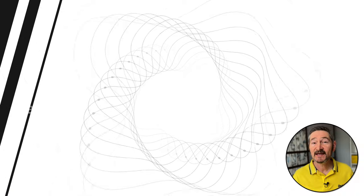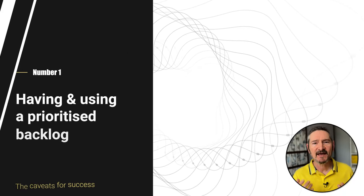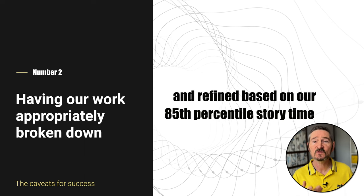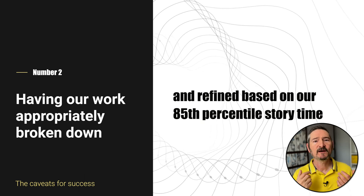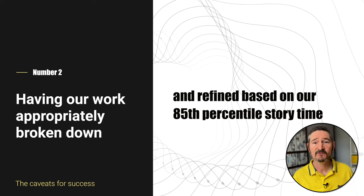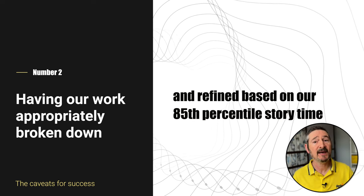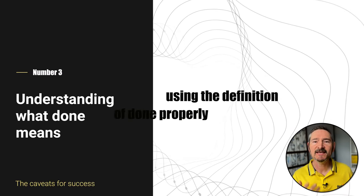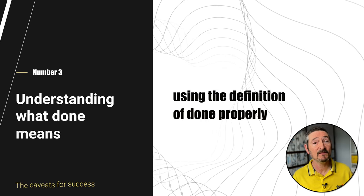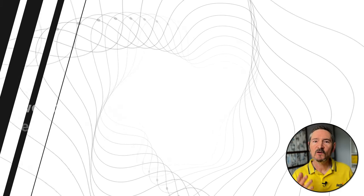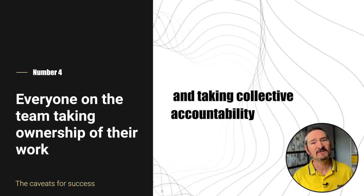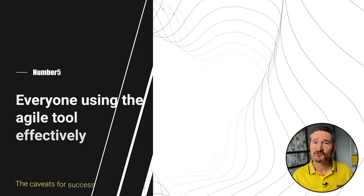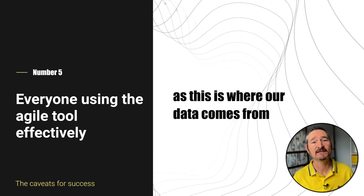The caveats: having and using a prioritised backlog; having your work appropriately broken down and refined based on your 85th percentile story cycle time — so if that number is 8 days, we know that 8 days is the largest story we can take; understanding what done means, so using a definition of done properly; everyone on the team taking ownership of their work and collectively being accountable — if one fails, we all fail, so support each other; and everyone moving their stories across the board at the right time, because this is where we get our data from.